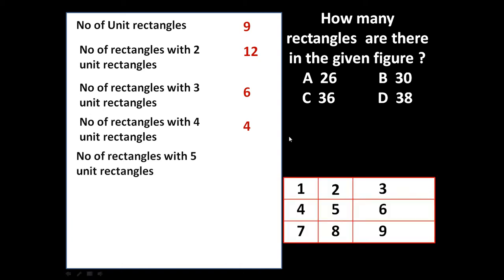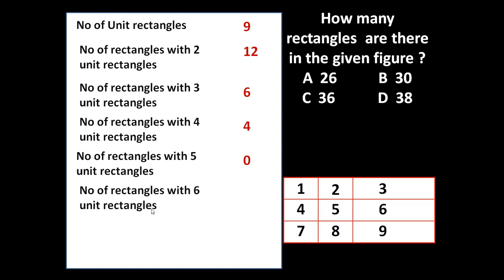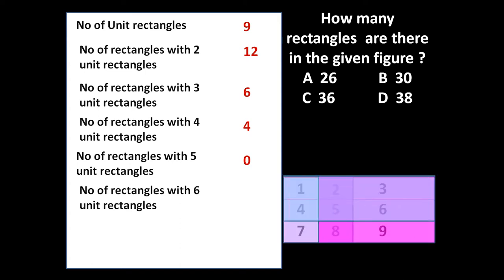With five unit rectangles, no new rectangle can be formed, so here it is zero. We cannot form a rectangle if we take five unit rectangles from the given figure. If we take six unit rectangles, can we form another rectangle? Yes — 1, 2, 3, 4, 5, 6 — if we take these six, another rectangle can be formed. So let us see: 1, 2, 3, 4 — four such rectangles can be formed with six unit rectangles.